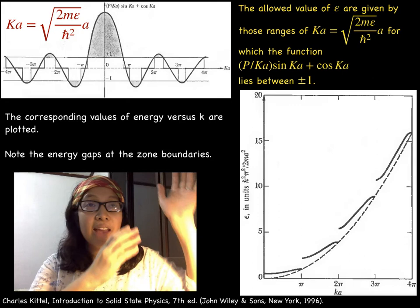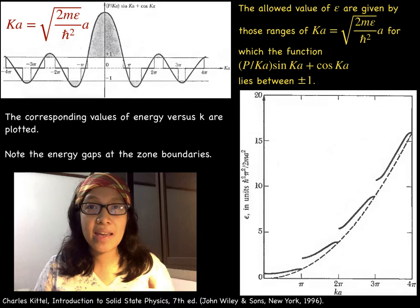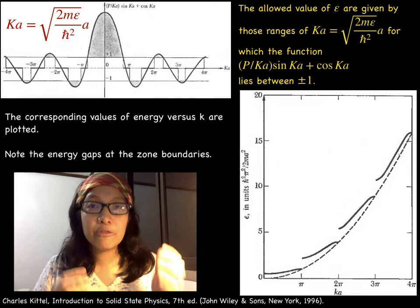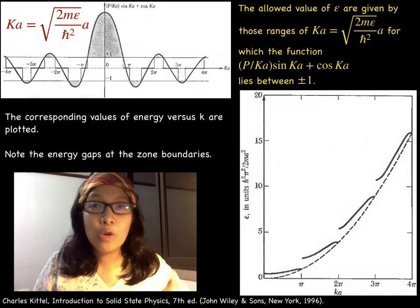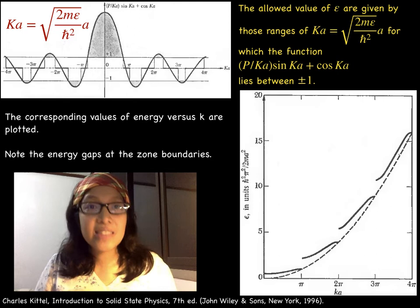The big K is related to the energy ε. However, the wave vector small k of the Bloch function is the important index. The dependent function should lie between positive 1 and negative 1. This determines the range of values of Ka with a capital K which in turn determines the allowed energy ε.